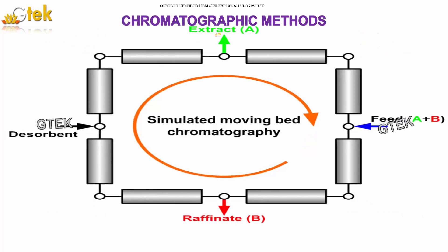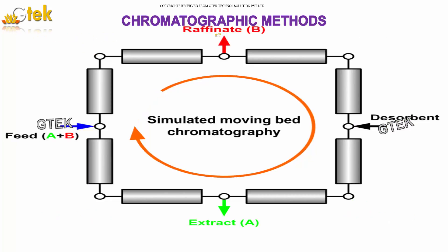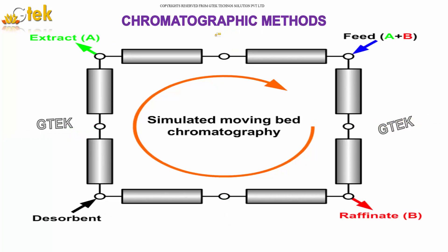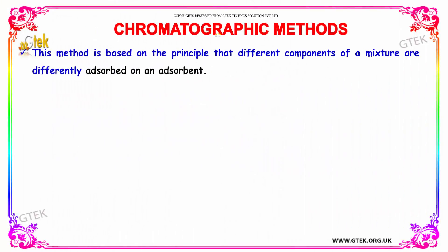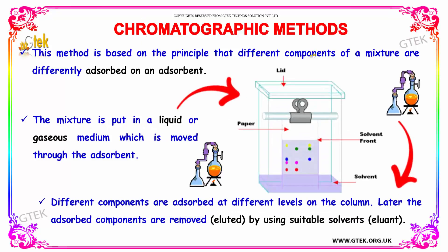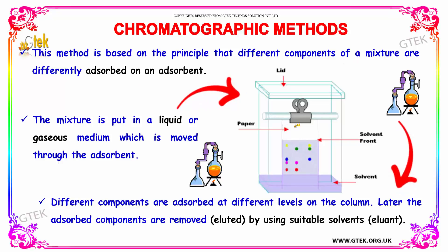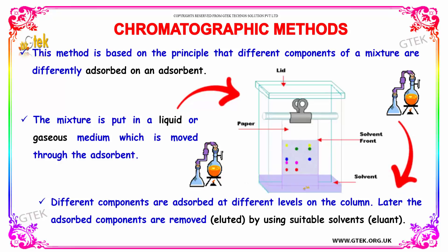This is on chromatographic methods. This method is based on the principle that different components of a mixture are differently absorbed on an adsorbent. The mixture is put in a liquid or gaseous medium which is moved through the absorbent. Different components are absorbed at different levels.